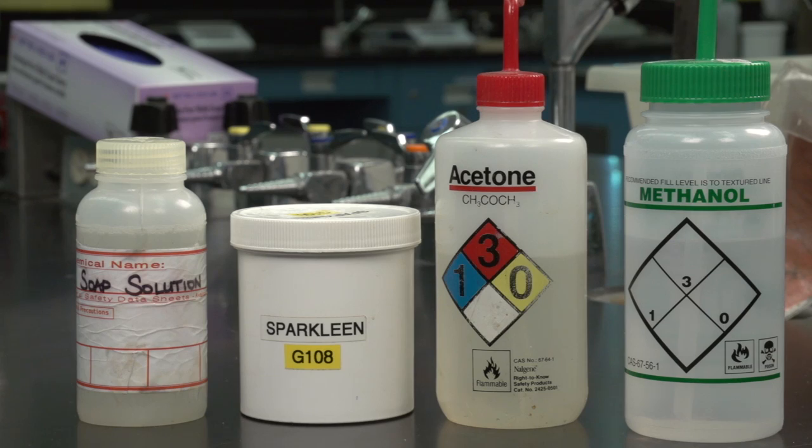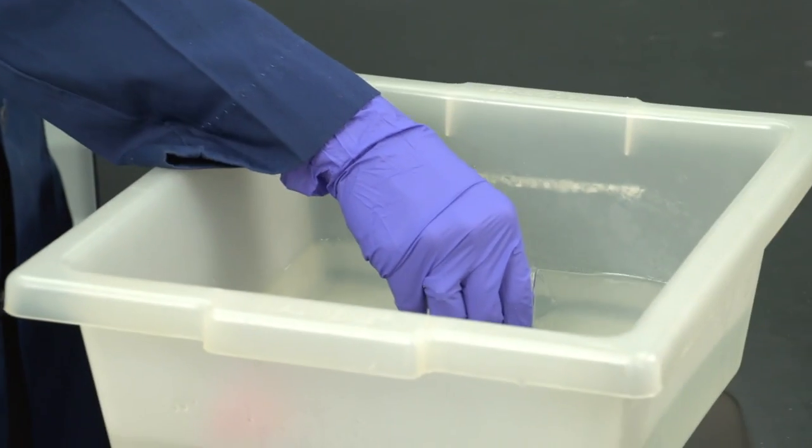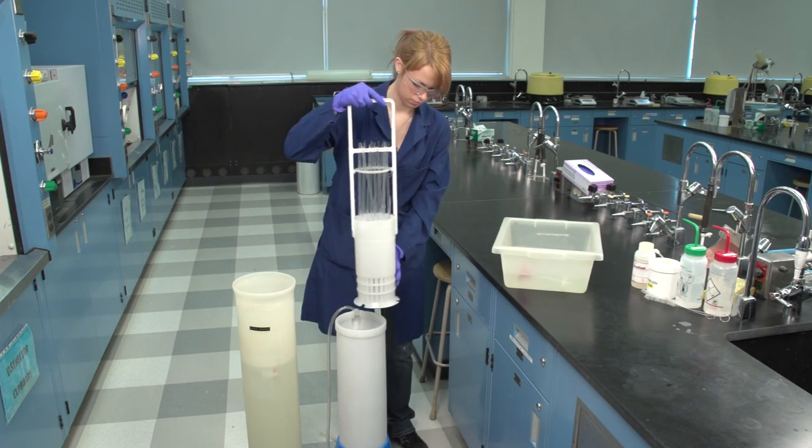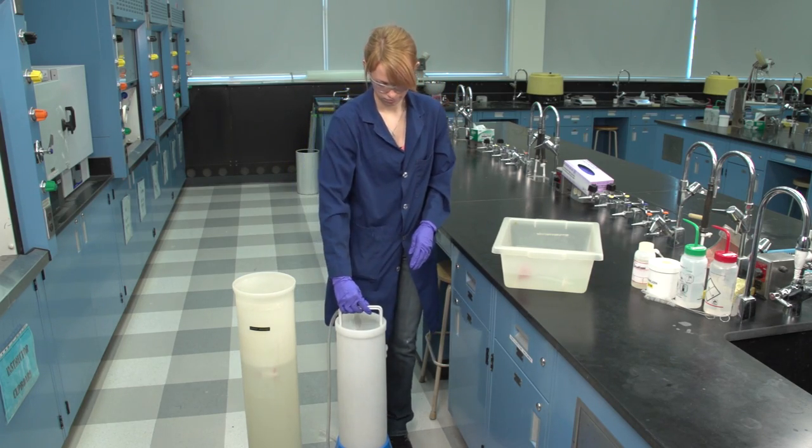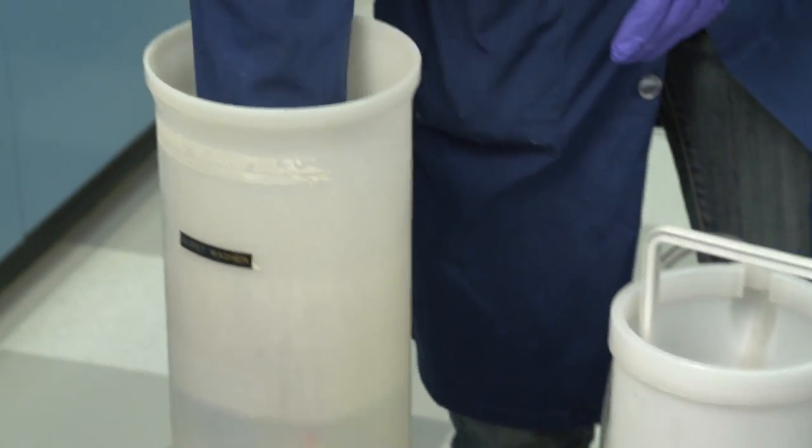Soap, detergent, or abrasive powder may be used for washing glassware. To remove stubborn stains, soak the glassware in a detergent solution. The soaking process can be either hot or cold and can continue for extended periods of time.